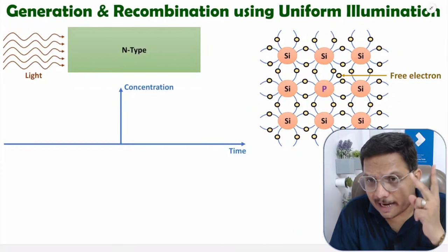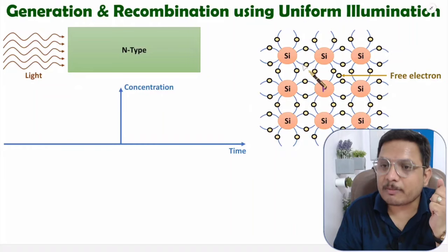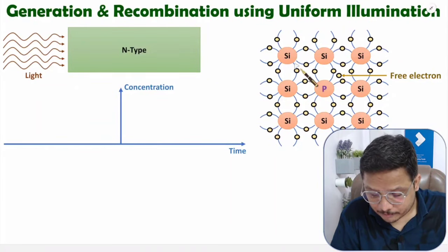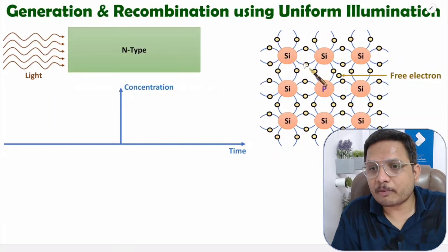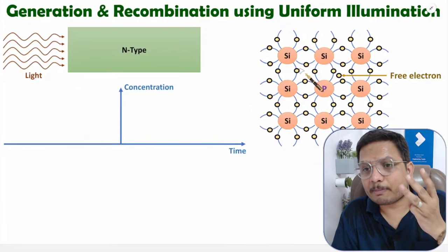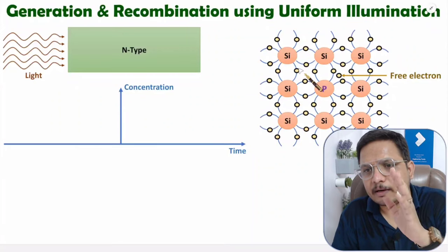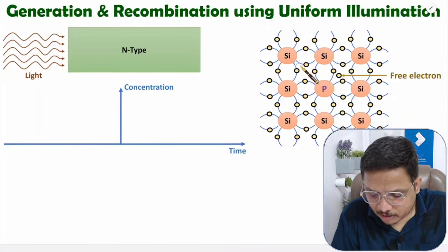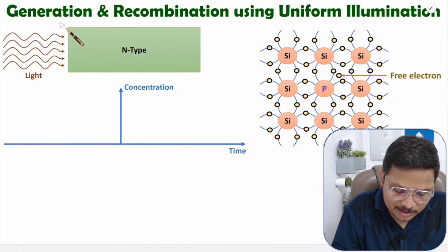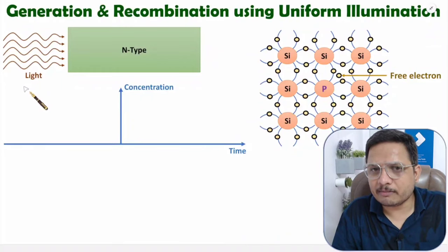The second way is by light: electrons absorb energy and break covalent bonds, generating electron-hole pairs. The third way is by applying an electric field, which can also generate free electron-hole pairs. Here we will be studying generation and recombination using uniform illumination by light.